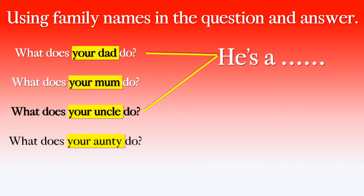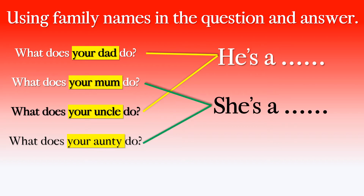What does your dad do? He's a mechanic. What does your uncle do? He's a pilot. So because these are men, we use he. He is — he's a mechanic, he's a pilot. And what about the ladies? What does your mum do? She's a dentist. What does your auntie do? She's an architect.